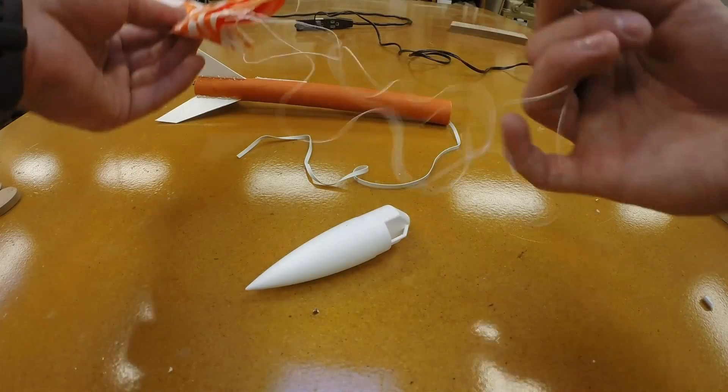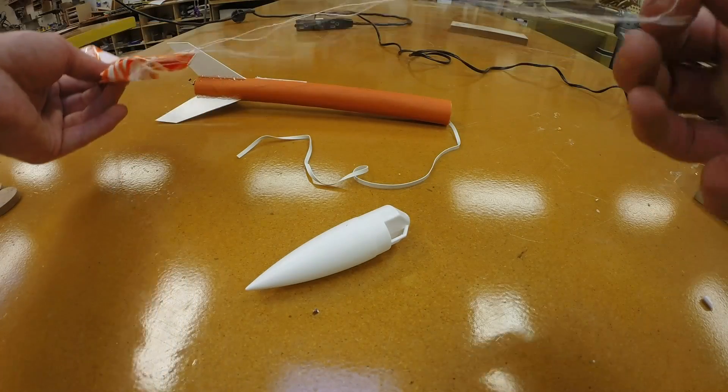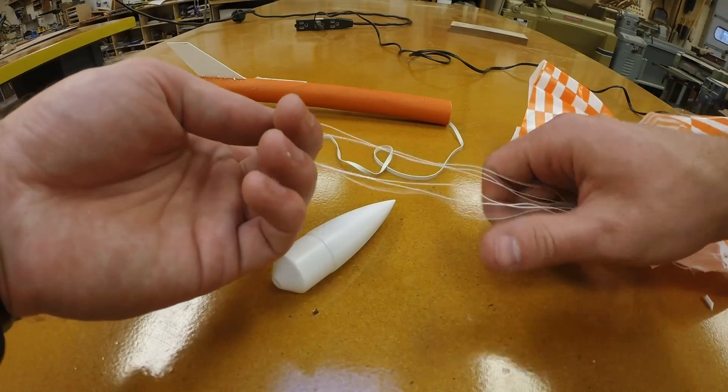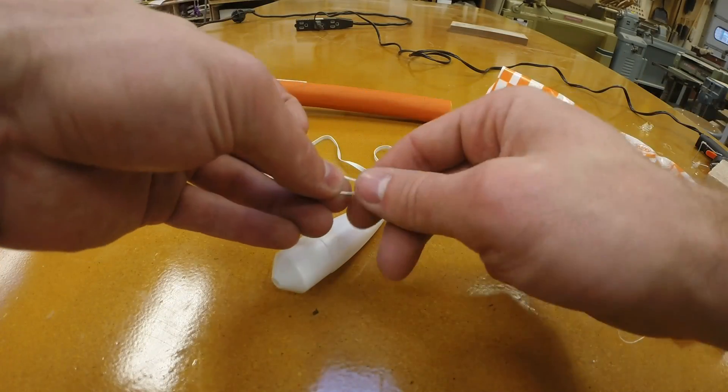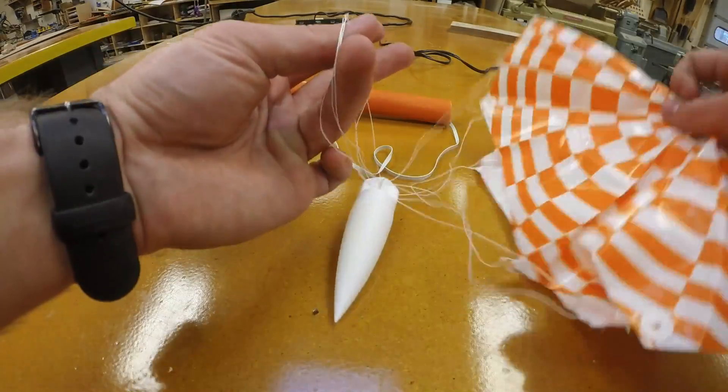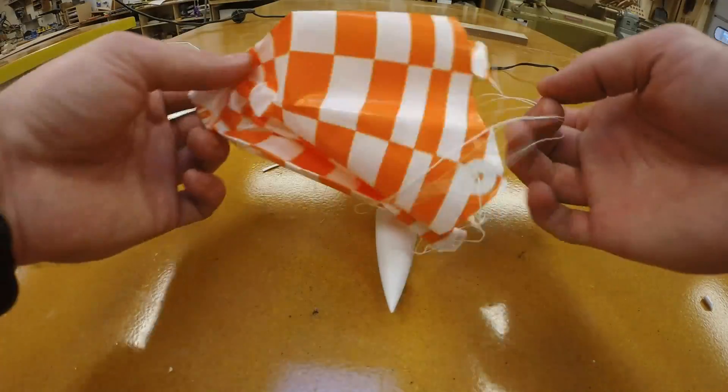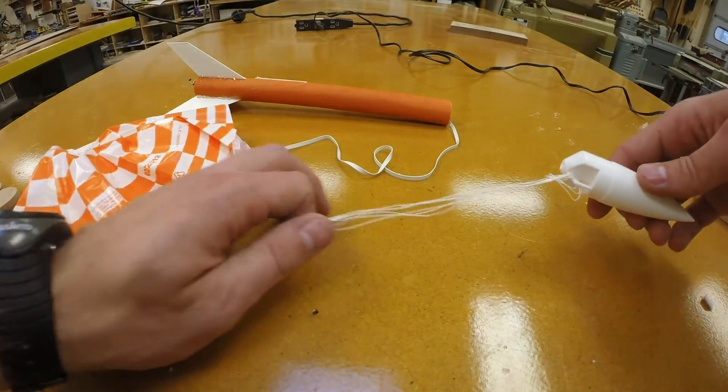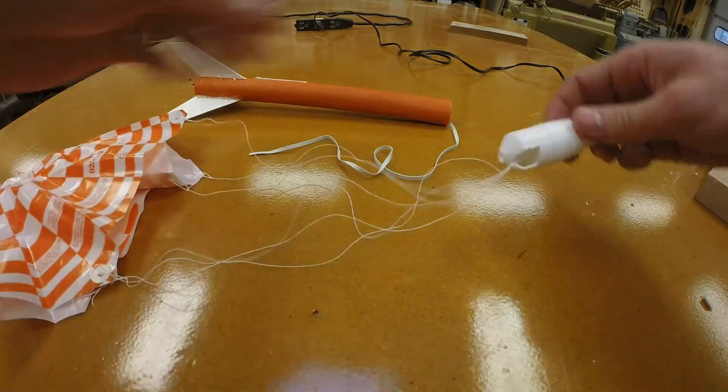Next, you're going to uncurl the wires for the parachute and there should be three loops in all these wires. You're going to find those three loops, pull them all the way to the end and then slide the loops through the eyelet in the nose cone, slide the parachute through the loop and pull the nose cone tight.